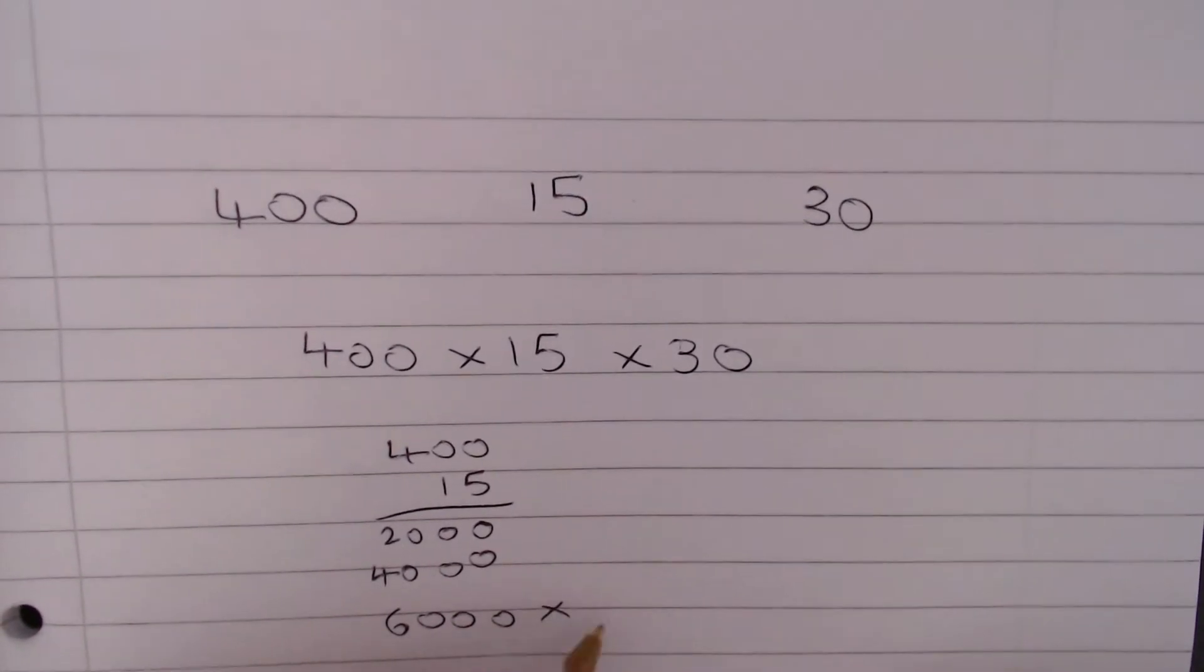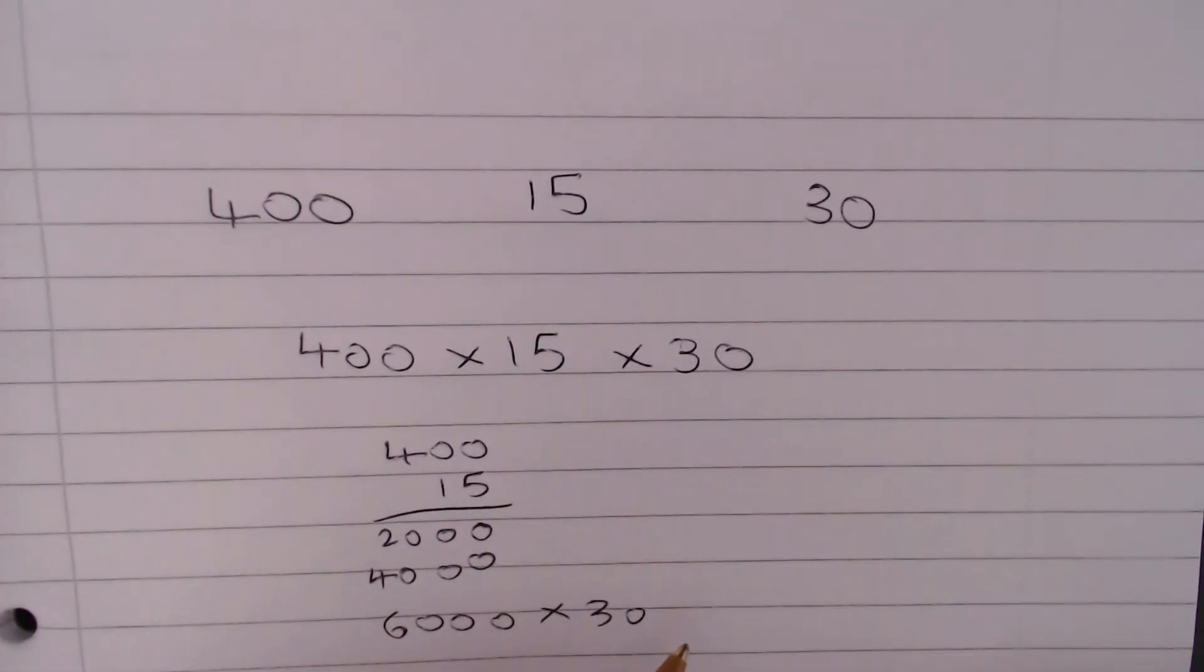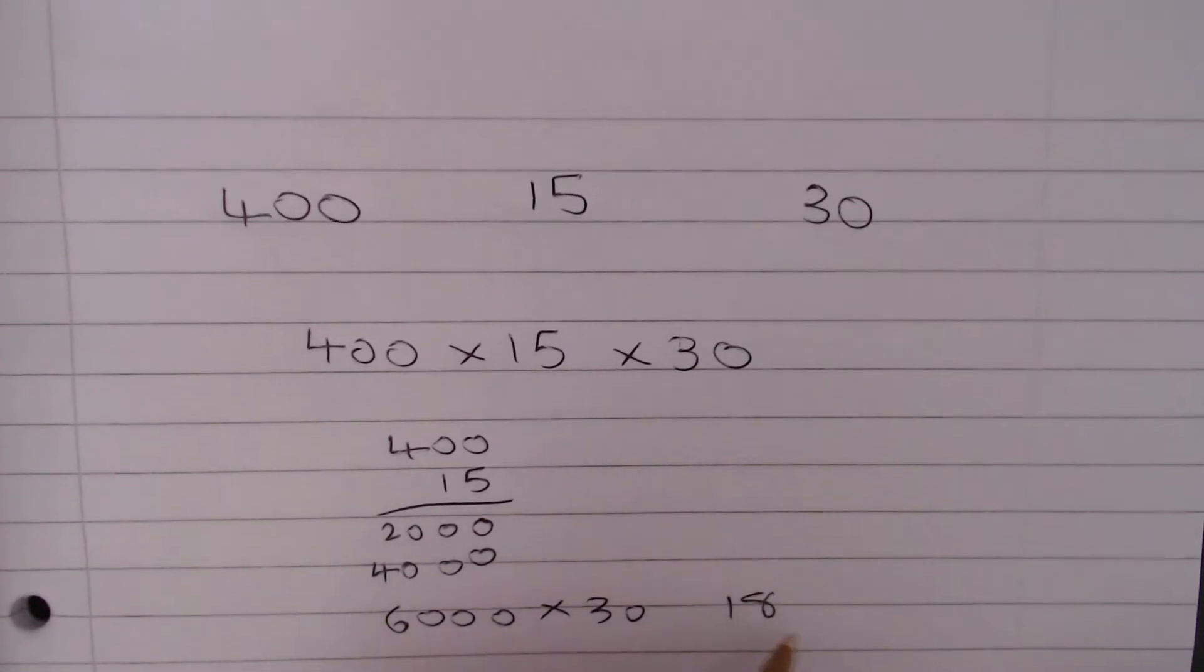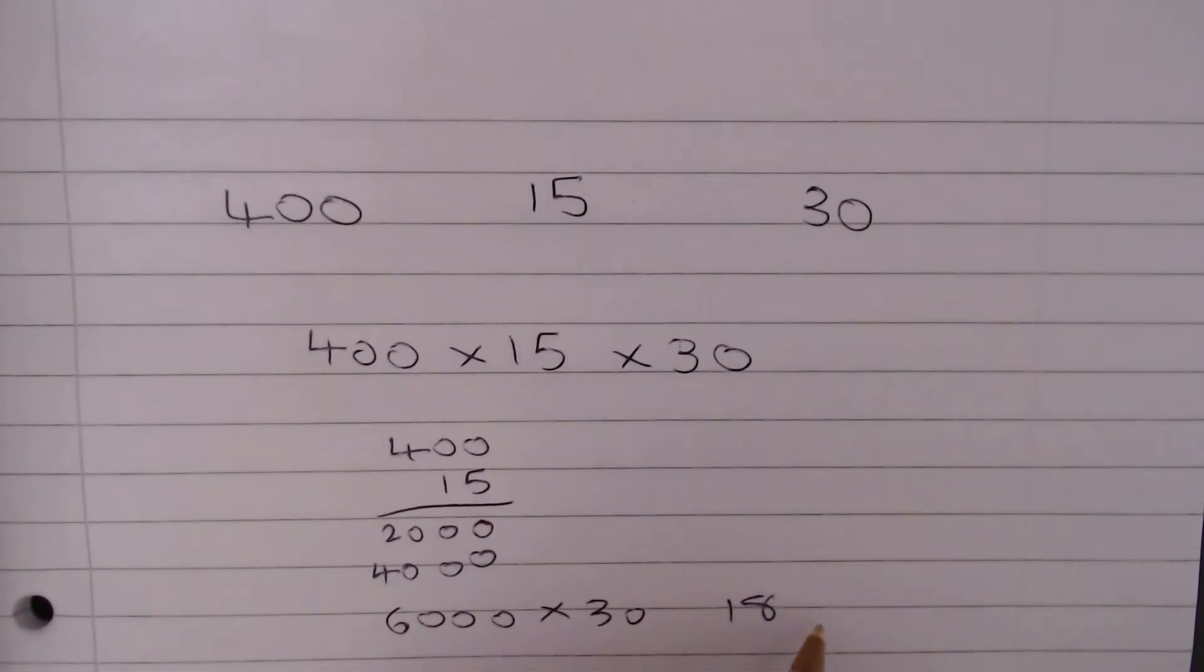Now, we're going to do 6,000 multiplied by 30. Well, 6 threes are 18, but we've got 1, 2, 3, 4 zeros to carry over.